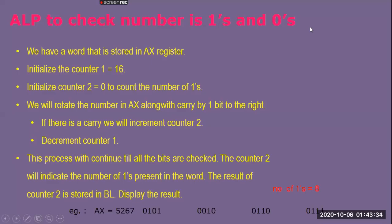The next program is an assembly language program to check, in a given number, how many ones and zeros are present — to count the ones and zeros in a given number.